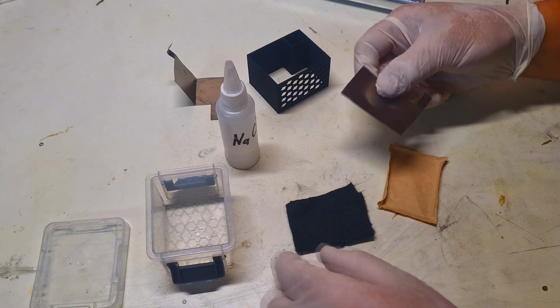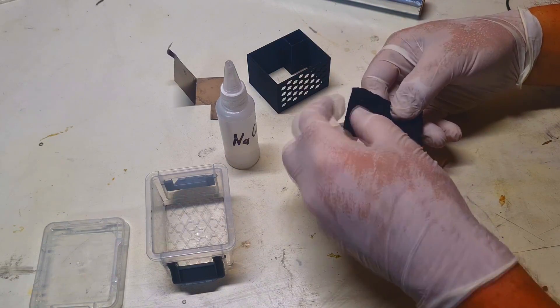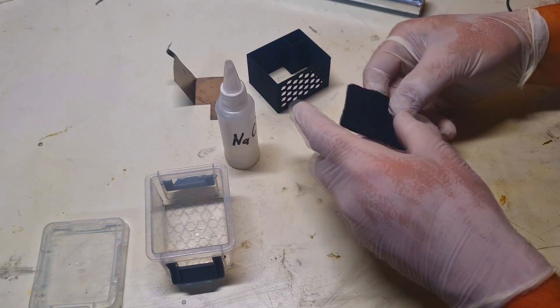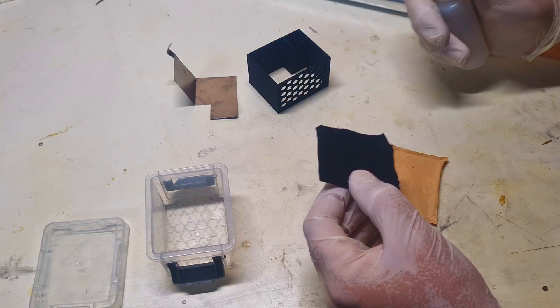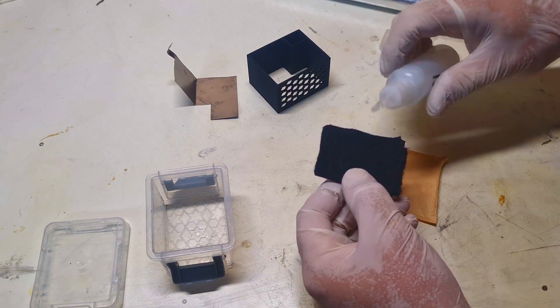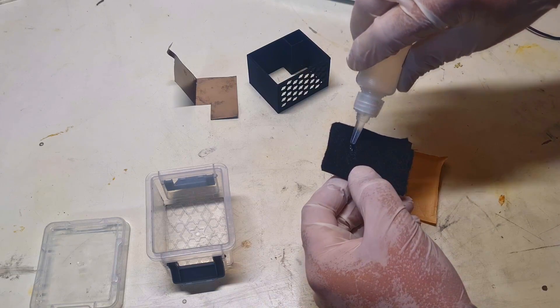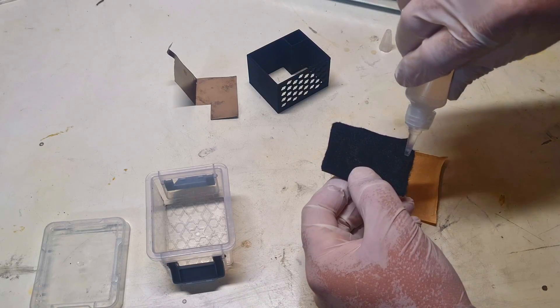Now we take the activated carbon felt, which will go on top of this titanium foil current collector. We will also pre-wet the activated carbon felt with sodium chloride electrolyte.